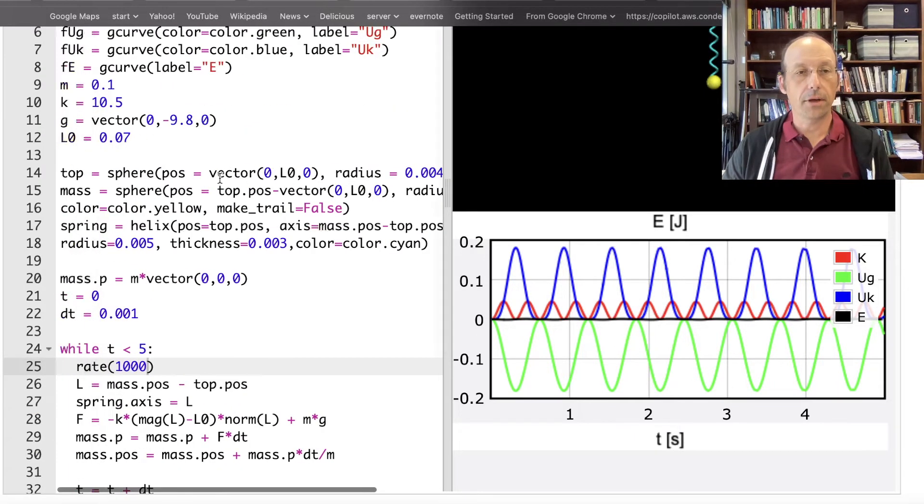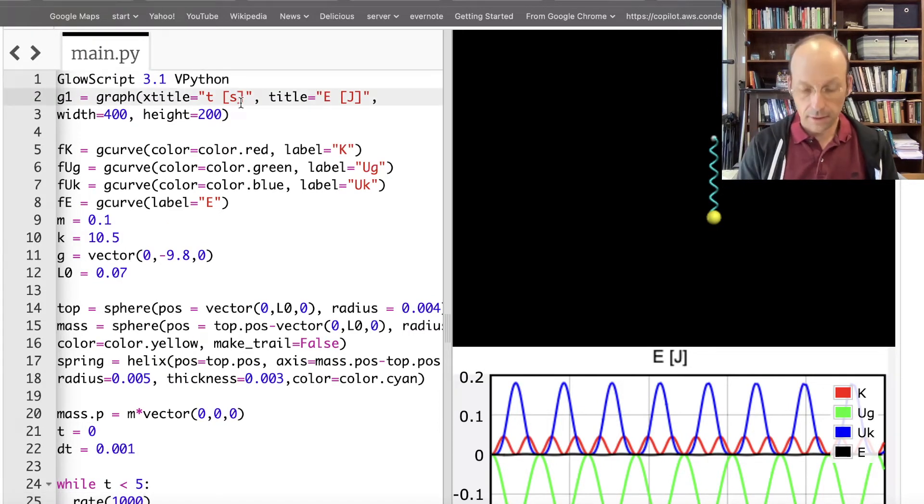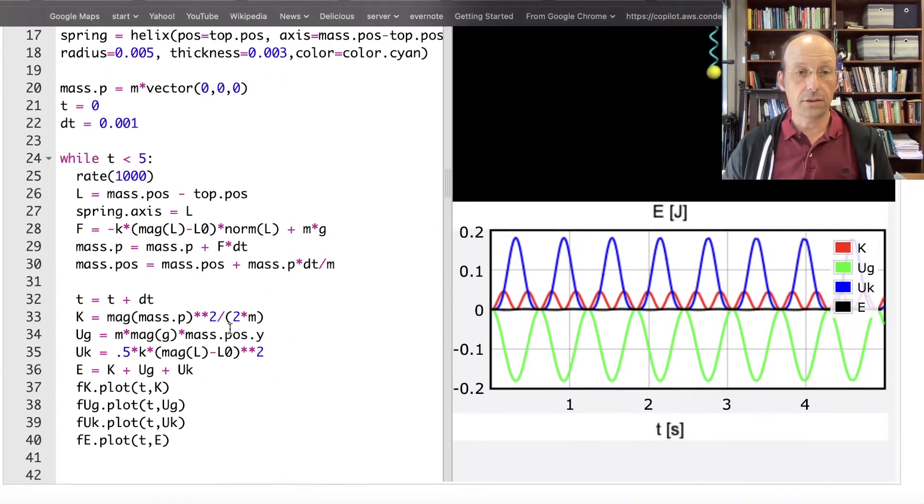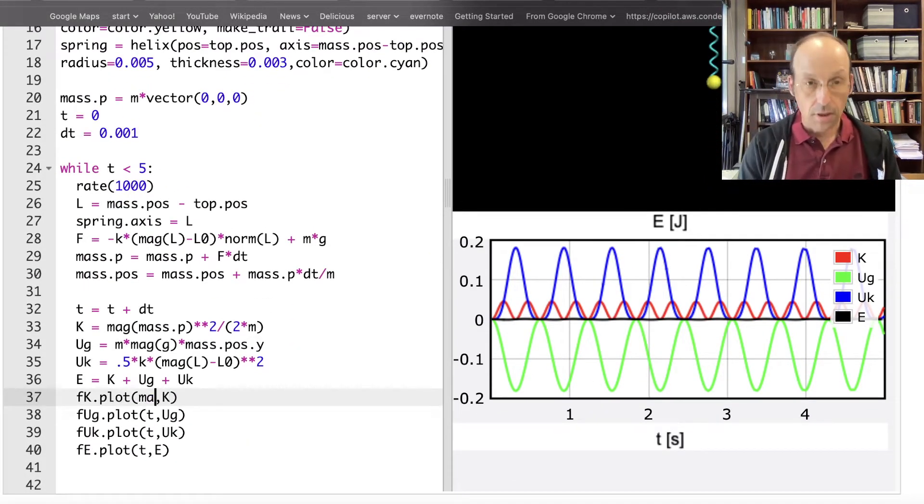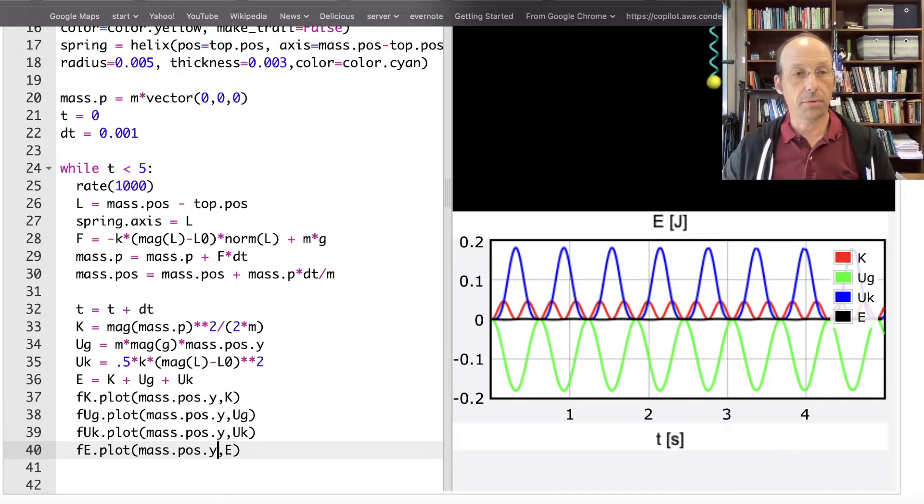So I'm just going to go up here to my graph. I'm going to call this y in meters. And then down here, that's pretty easy to change. I just change instead of t. I'm just going to do mass.pos.y, mass.pos.y, mass.pos You've got to actually say it. When you're typing, if you're not saying this and you're not a real programmer, mass.pos.y Now let's plot that.